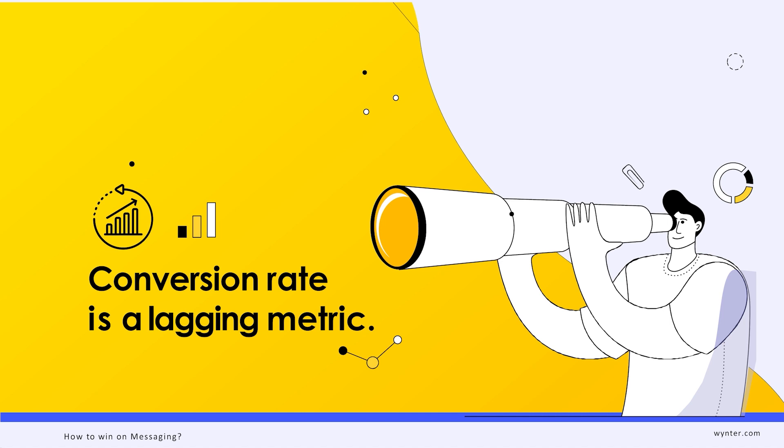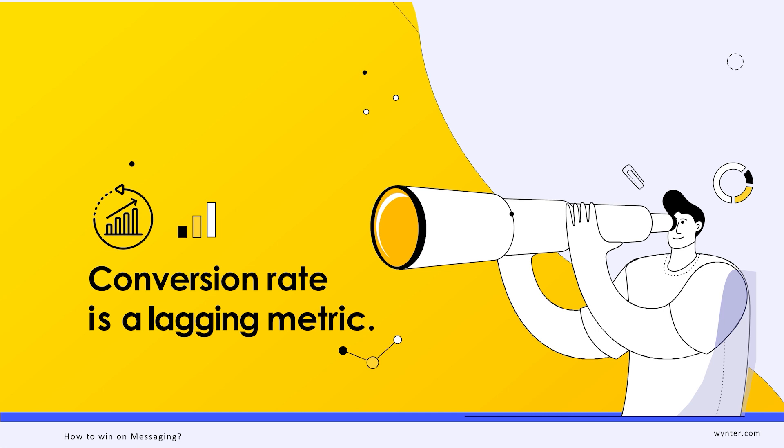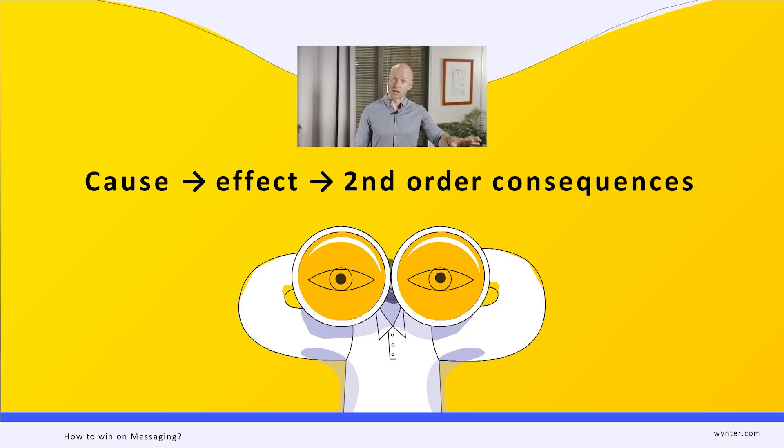I'll look at the conversion rate. Well, conversion rate is a lagging metric, which means that it's kind of like driving by looking at the rear view mirror. It's what already happened, right? Conversion rate is the effect. And messaging is the cause.